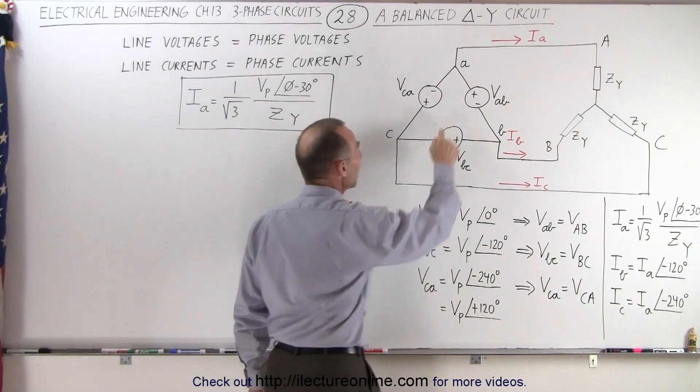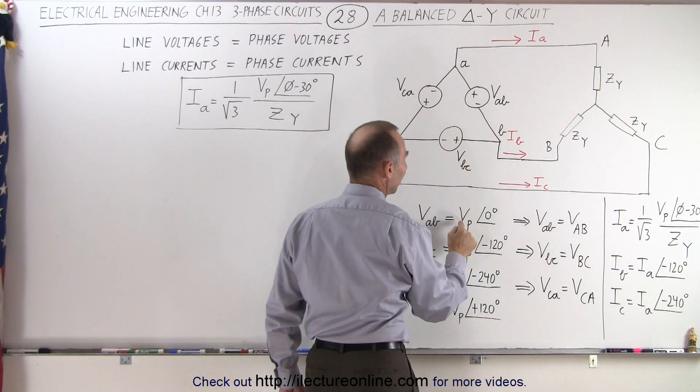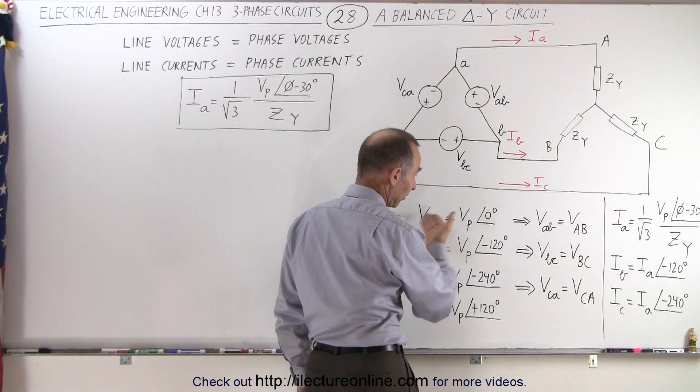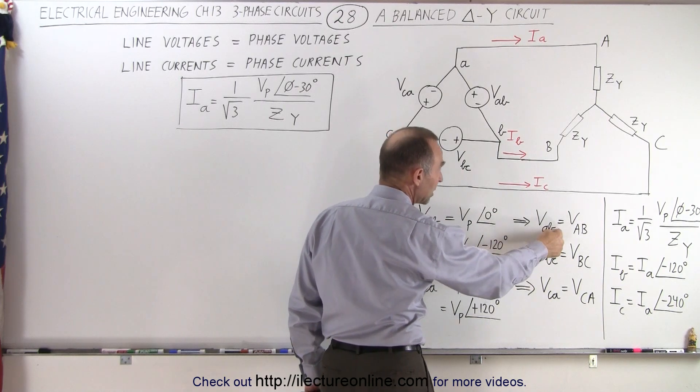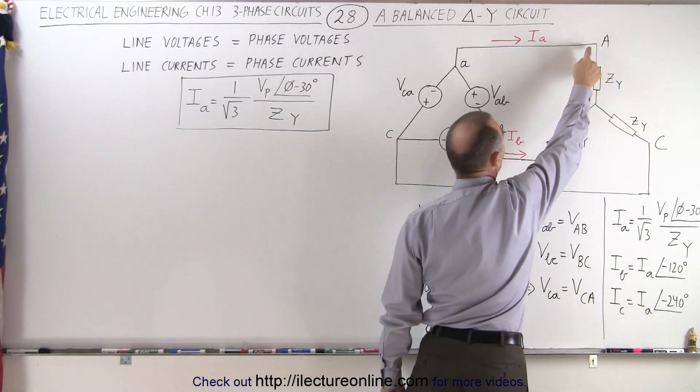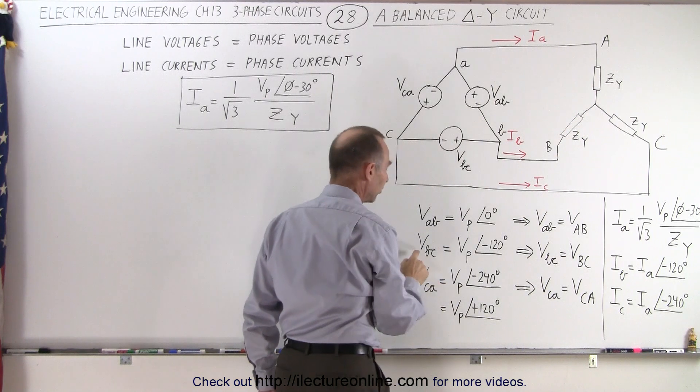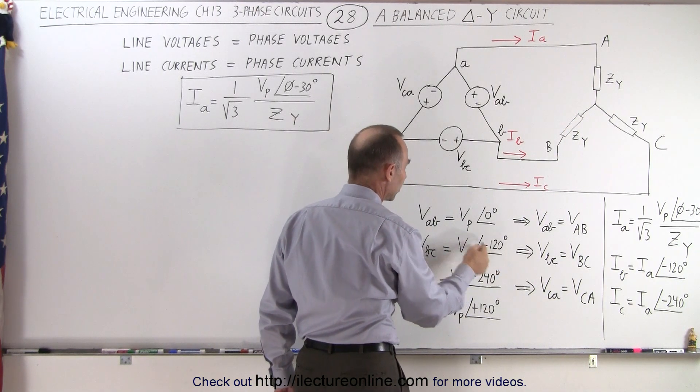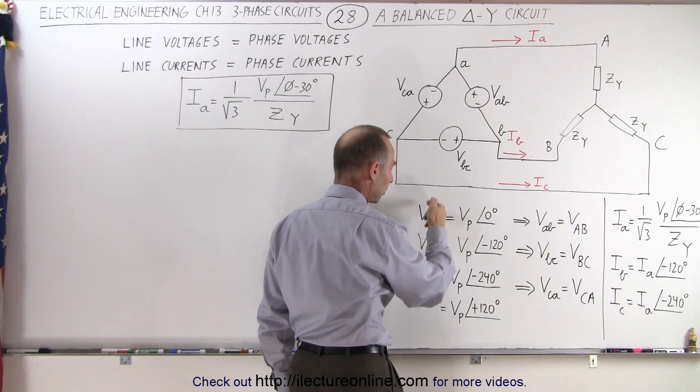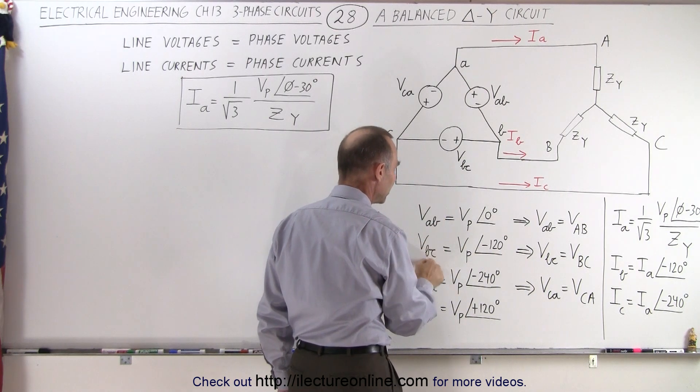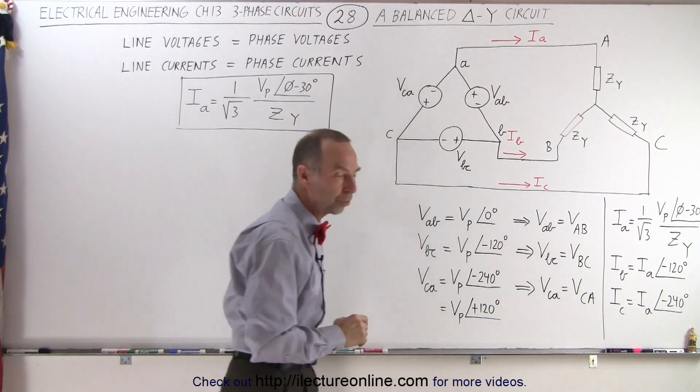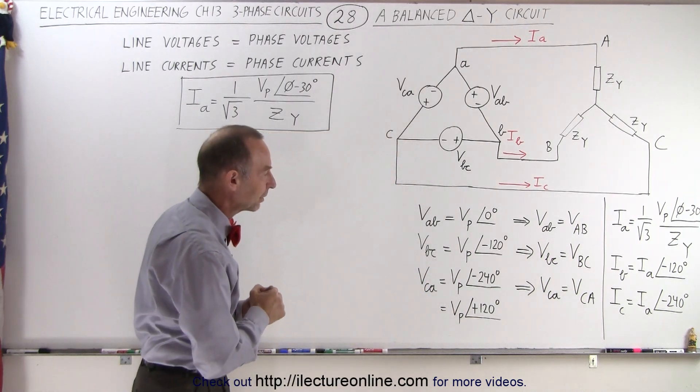Which means that VAB is equal to the phase voltage with a phase angle difference of zero degrees. In other words, it's exactly the same. VAB equals VAB, the voltage from there to there. We can also say that VBC therefore is equal to phase voltage minus 120 degrees. In other words, there's a difference of 120 degrees between VAB and VBC, and again, between VBC and VCA. So we're used to that from the delta-delta circuit.